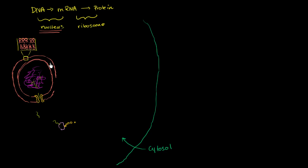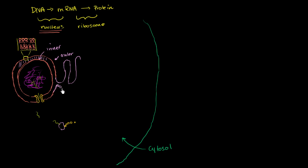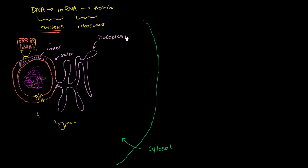Contiguous with the perinuclear space—the space between the two membranes—you have the inner and outer nuclear membrane. You can continue the outer nuclear membrane into flaps and folds and bulges, which form a separate organelle called the endoplasmic reticulum. The endoplasmic reticulum is key for producing and packaging proteins that are embedded in the cellular membrane or used outside of the cell.